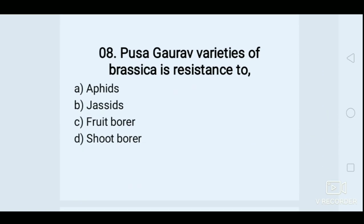Pusa Gaurav variety of Brassica is resistant to — Options: A. Aphids, B. Jassids, C. Fruit borer, D. Shoot borer. Answer: A. Aphids.